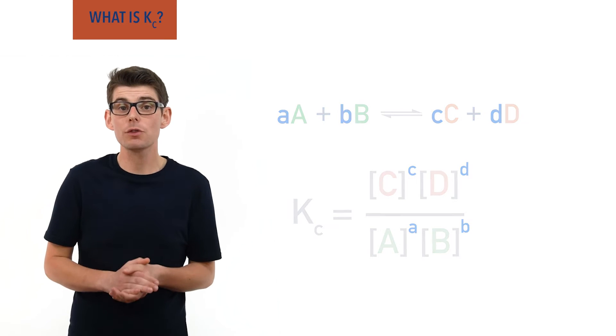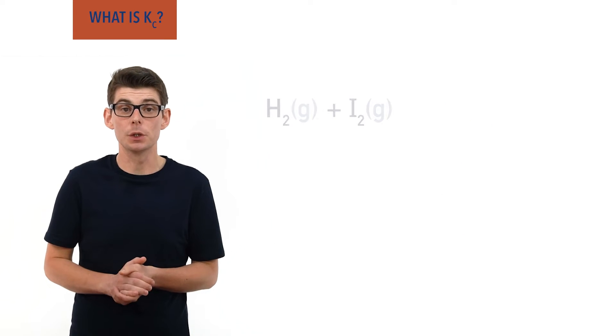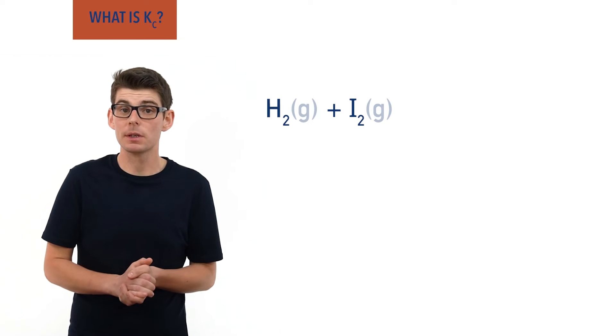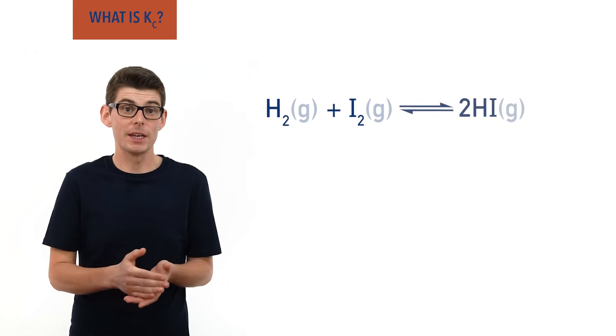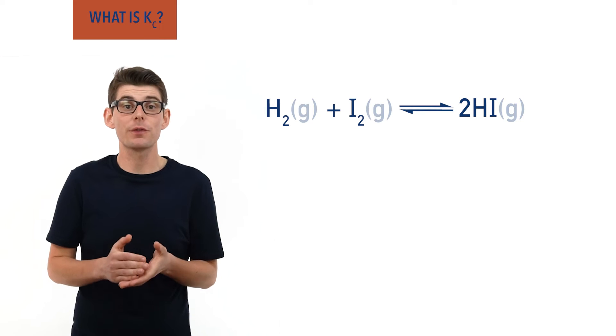For example, hydrogen and iodine, H2 and I2, form an equilibrium system with hydrogen iodide, HI, as the product of the forward reaction.